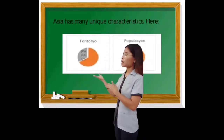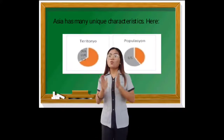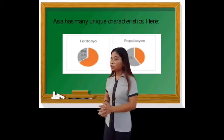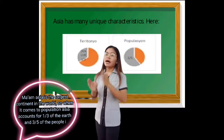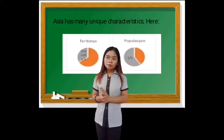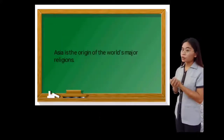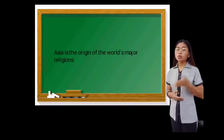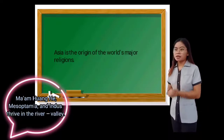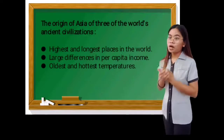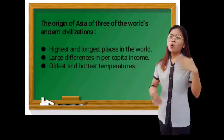Asia has many unique characteristics. One third and three fifth of various measures. Why do you think Asia has a large population? That's right, because the larger the landmass, the larger the population. Asia is also the origin of the world's major religions. Give me religions that you know. That's right. Asia is also the origin of three of the world's major civilizations.